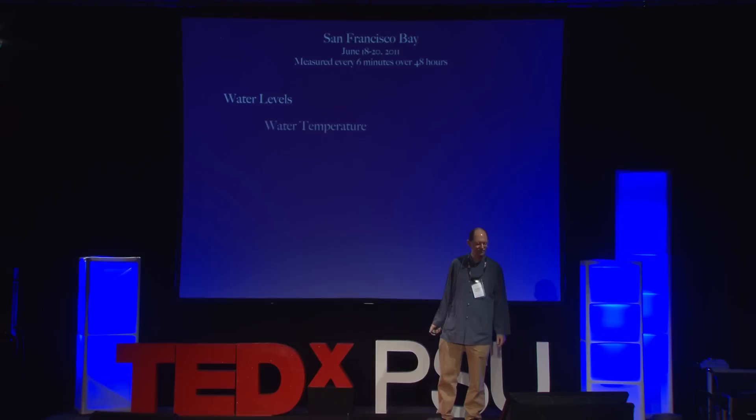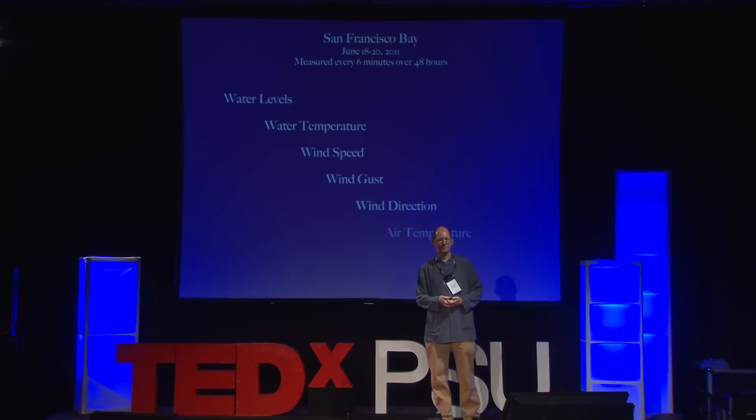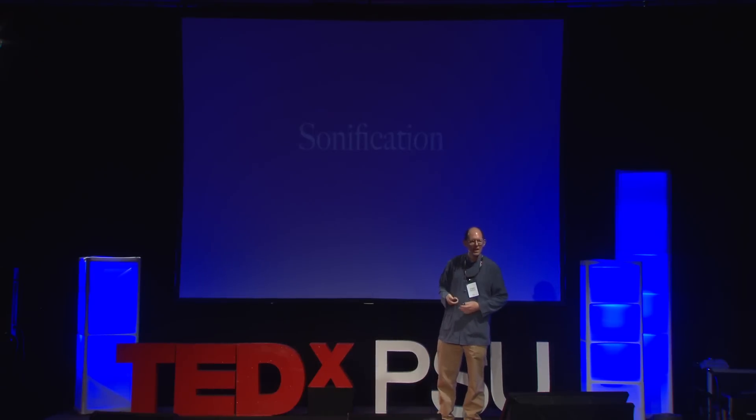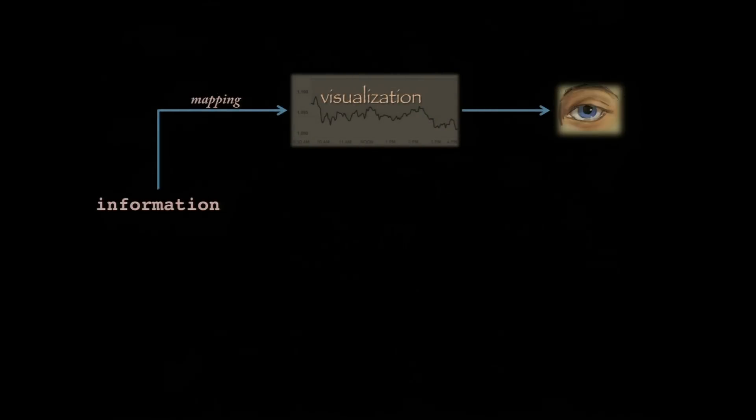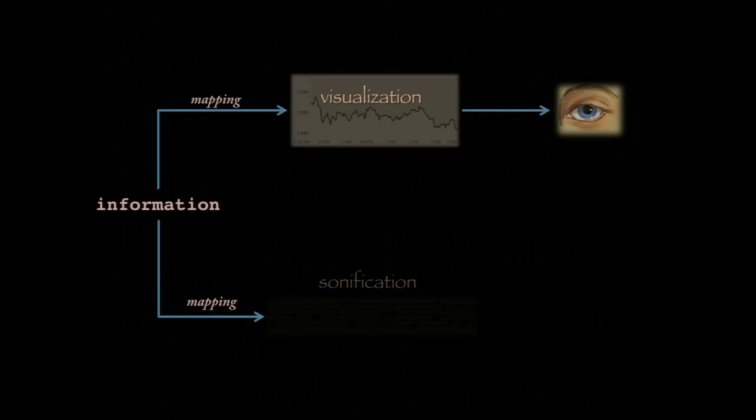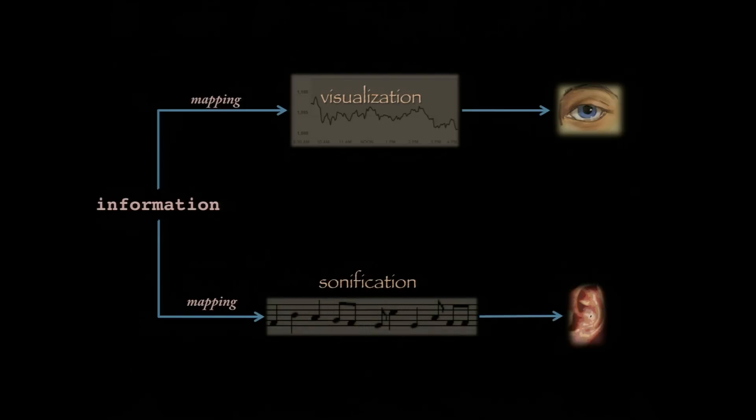So you put all of these together, and you get something like this. This is a process called sonification, where data sets are represented as sound. It's just like visualization, really, where information is represented by visual symbols. With sonification, we represent information with auditory symbols.